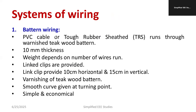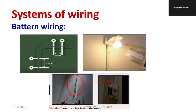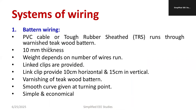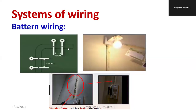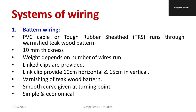Let's start with batten wiring. Looking at the picture, you can see the batten-style wiring — you may have seen this wooden batten before. Batten wiring uses a PVC cable or TRS (Tough Rubber Sheet) that runs through a varnished teak wood batten. The PVC cable lies over the wood batten — that is exactly what happens in batten wiring.